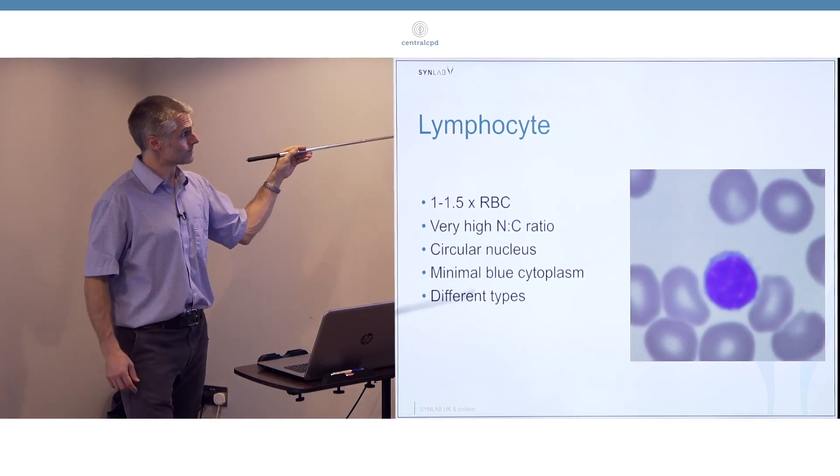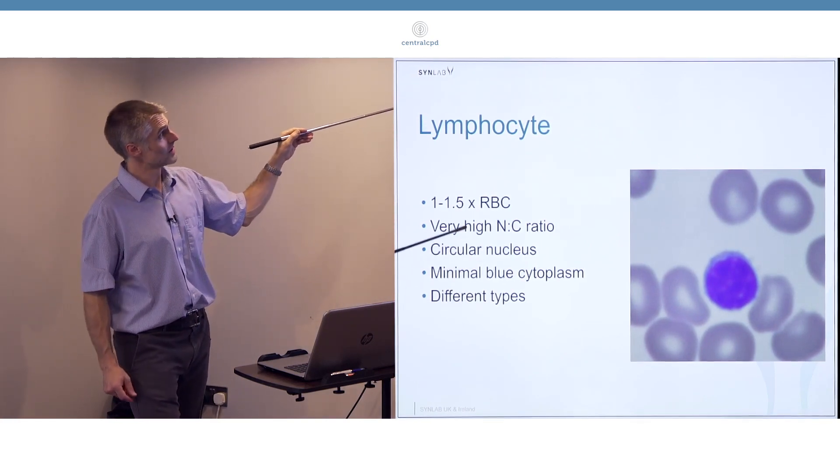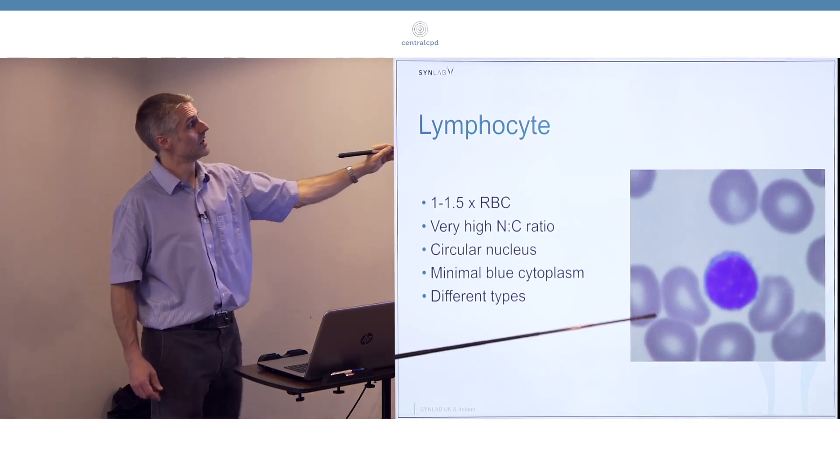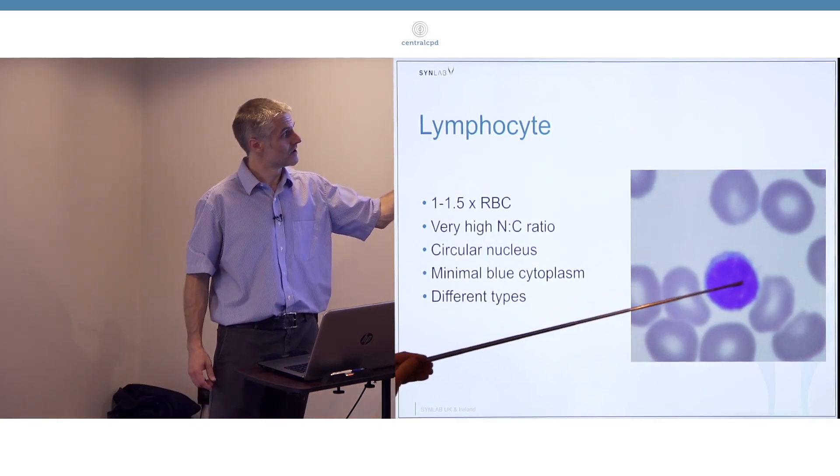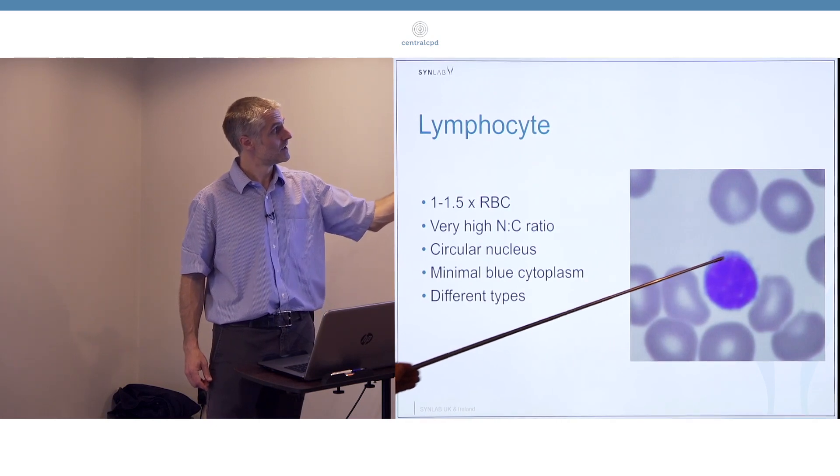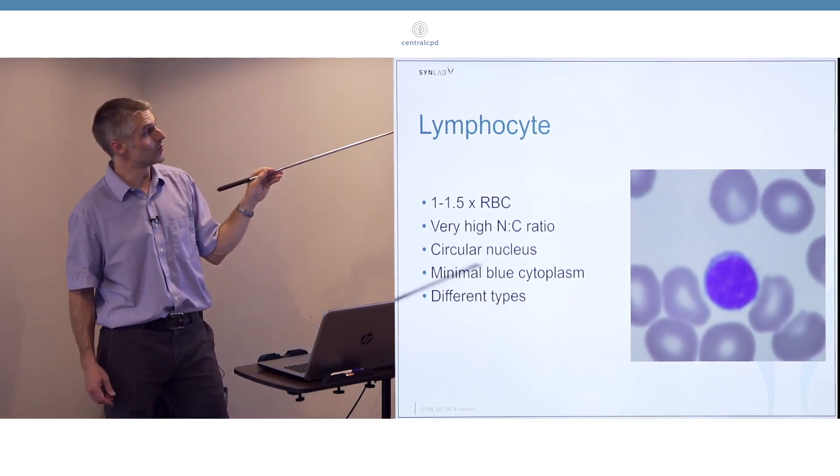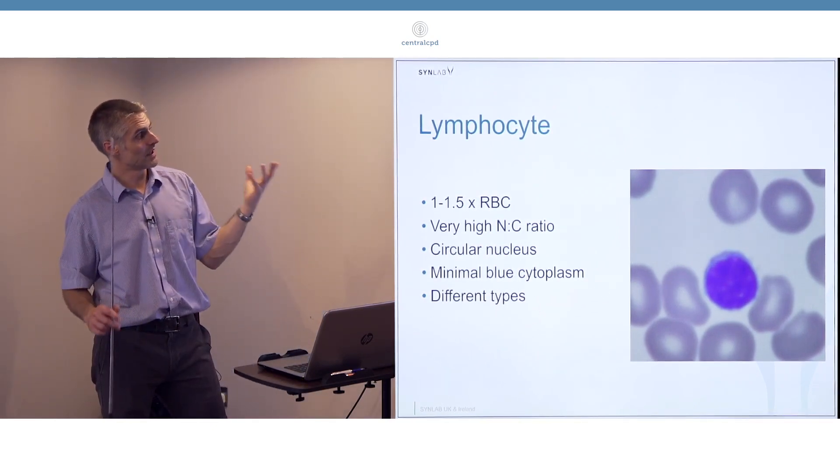Lymphocytes are smaller, the smallest ones. They have a very high nuclear to cytoplasmic ratio, so most of the cell is nucleus and very little cytoplasm. The cytoplasm is usually a uniform blue color.